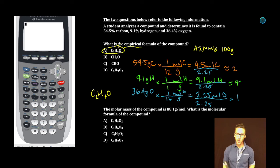This is a two-part question. The College Board now really likes to give you a set of data or information and ask you several multiple choice questions about it. Let's tackle this next part. The molar mass of the compound is 88.1 grams per mole. What is the molecular formula of the compound?